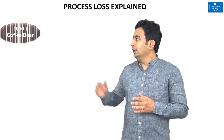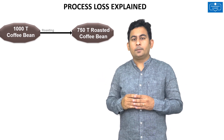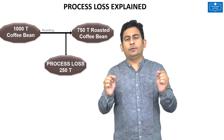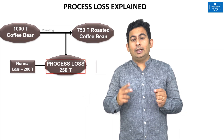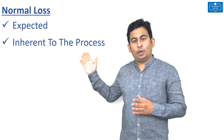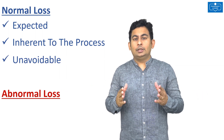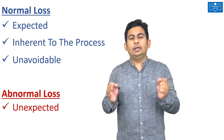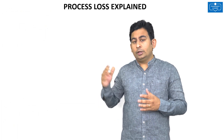Anything over and above the normal loss is considered as abnormal loss. In another scenario, introducing 1000 tons but getting only 750 tons means a total loss of 250 tons — 200 tons is normal loss and the additional 50 tons is abnormal loss. To summarize: normal loss is expected, inherent to the manufacturing process, and unavoidable; whereas abnormal loss is an unexpected and usually controllable loss.